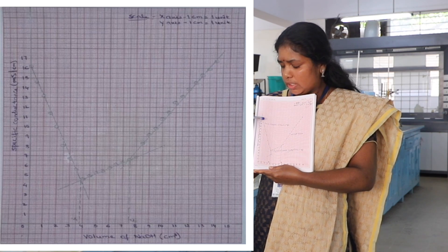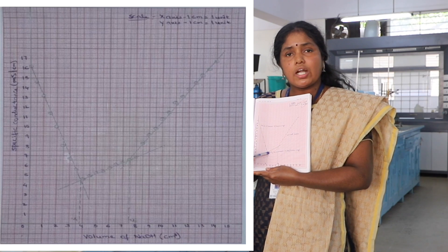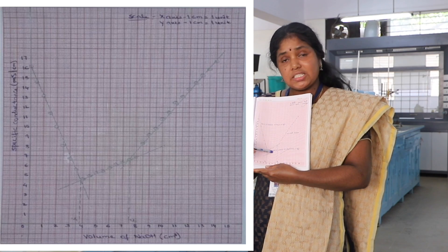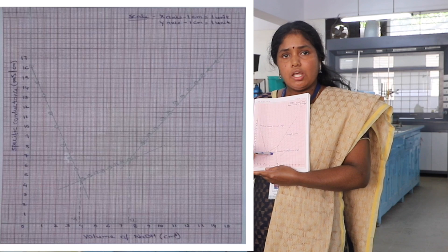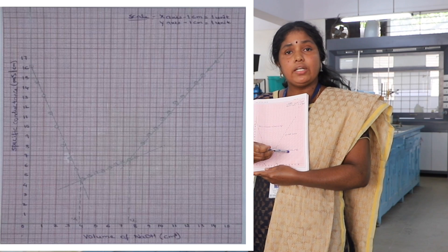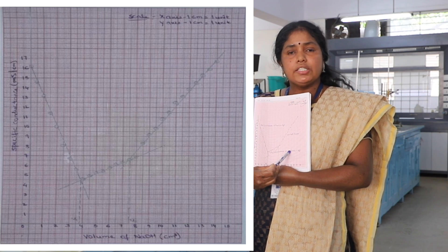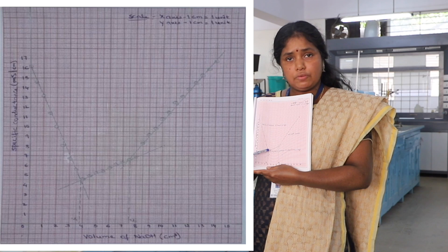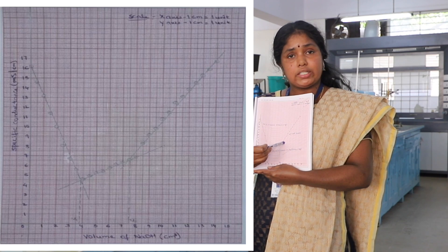So to begin with, you will start to see a decrease in specific conductance as you add sodium hydroxide into the acid mixture. This continues till all the HCl has been neutralized and the dissociation of acetic acid begins. On further addition of sodium hydroxide, neutralization of acetic acid occurs, forming sodium acetate as the salt. Since sodium acetate dissociates better than acetic acid, we see an increase in specific conductance as more sodium acetate is formed.